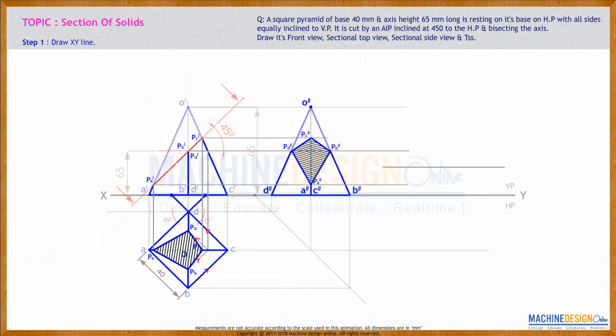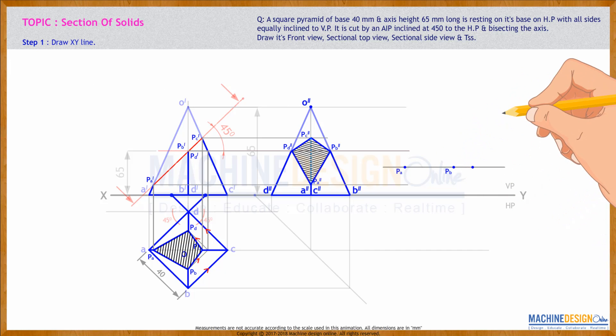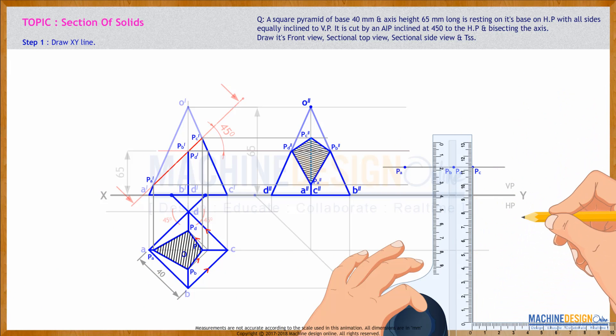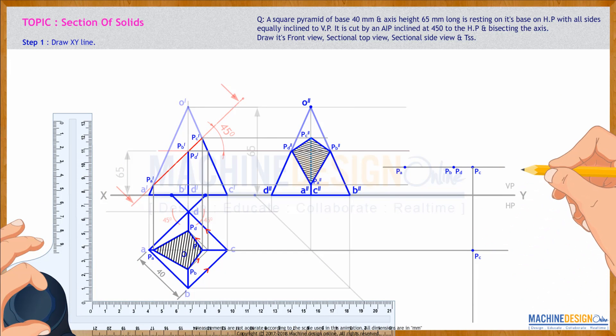Now we will draw TSS. So what we will do, we will take this cutting plane line, and we will draw horizontal, parallel to XY. We will take this distance: PB dash, PD dash, PB dash, PD dash, and PC dash. We will cut on this side. We will take PB dash, PD dash to PA dash, and we will cut on this side. So this is PA, PB, PD, PC. Now you extend PC from here. You extend PC from here. Wherever to cut, that is PC.